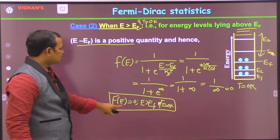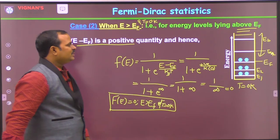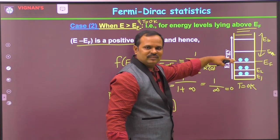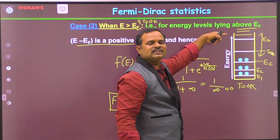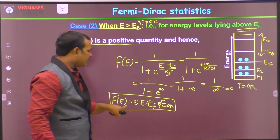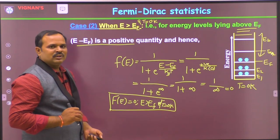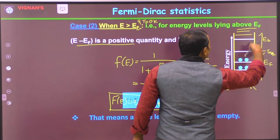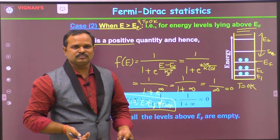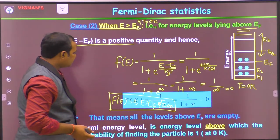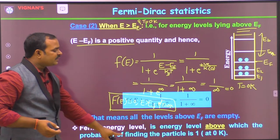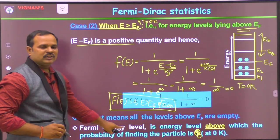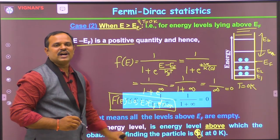This means the probability of finding a particle above the Fermi level is always 0, because the Fermi level is the highest filled energy level — below it all levels are filled, and above it all levels are empty. There are no electrons above the Fermi level. So the Fermi energy level is the energy level above which the probability of finding the particle is 0.